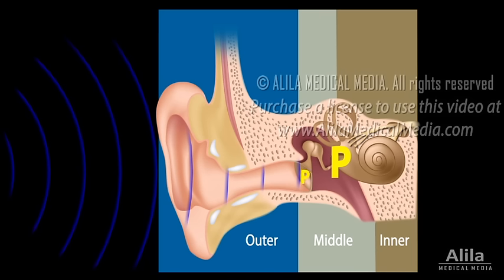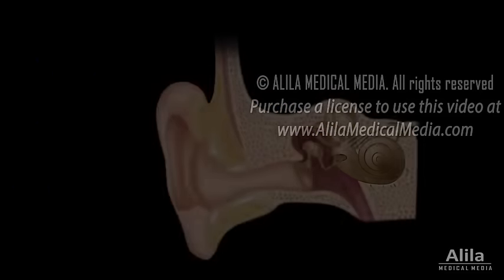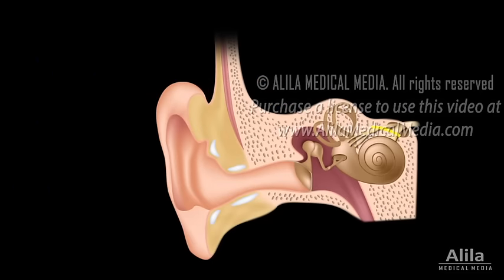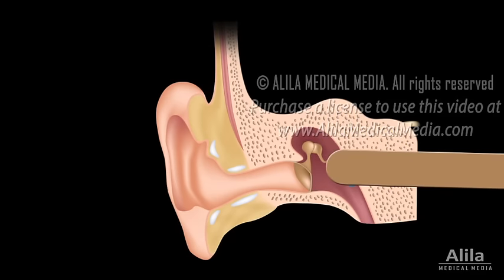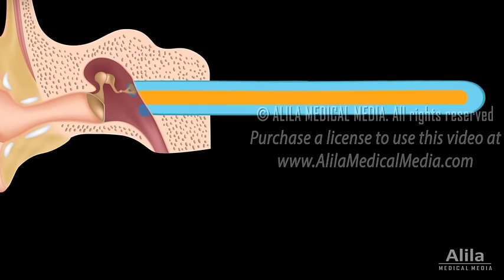This amplification is essential for the stapes to push against the higher resistance of the fluid in the inner ear. The organ of hearing in the inner ear is the cochlea, essentially a long tube that is coiled up in a spiral to save space. The cochlea is composed of three fluid-filled chambers. The central chamber, known as the cochlear duct, is where mechanical vibrations are transformed into nerve impulses.